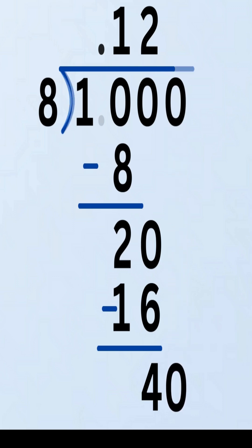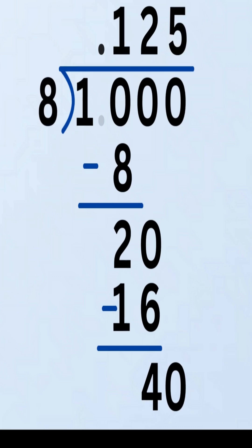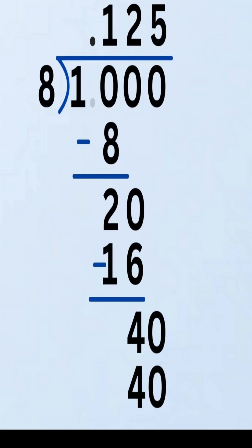Ask: how many times does 8 go into 40? That's 5 times. Write 5 in the quotient. Multiply: 8 times 5 equals 40. Subtract: 40 minus 40 equals 0.